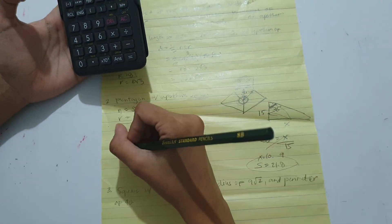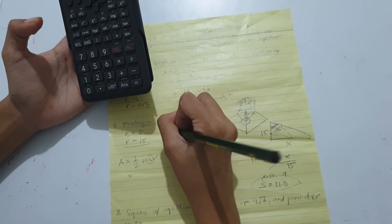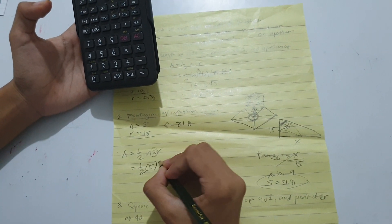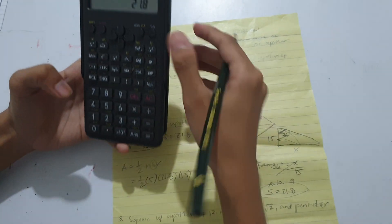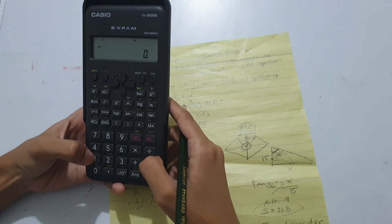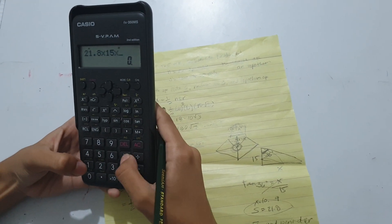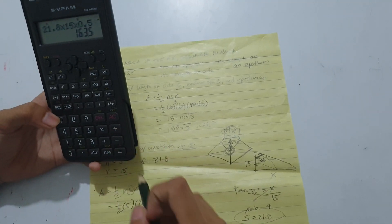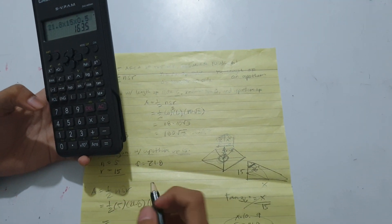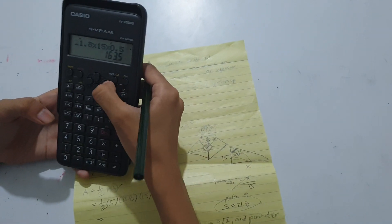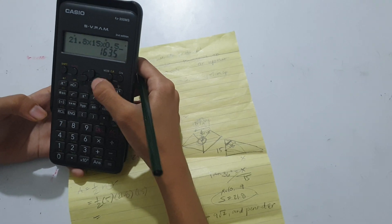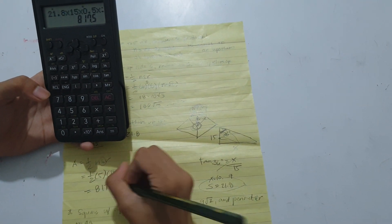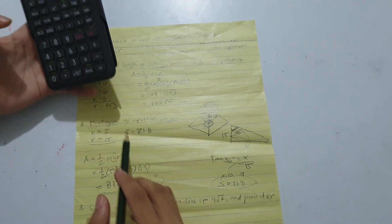Now we can substitute the variables into the formula. One-half times 5 times 21.8 times 15. That would be 817.5 units squared as its area.